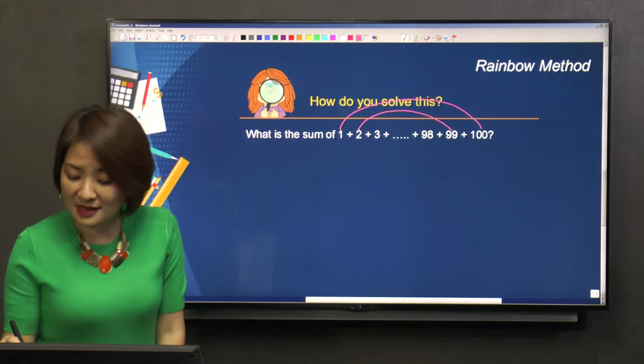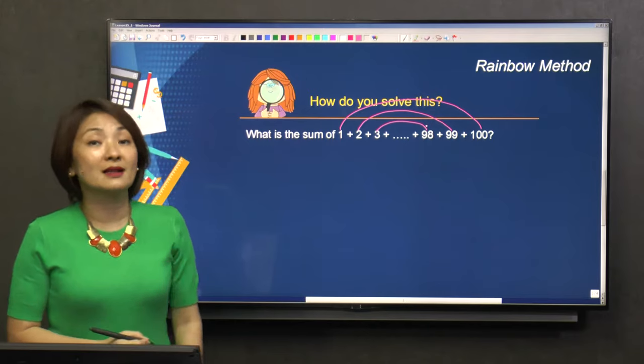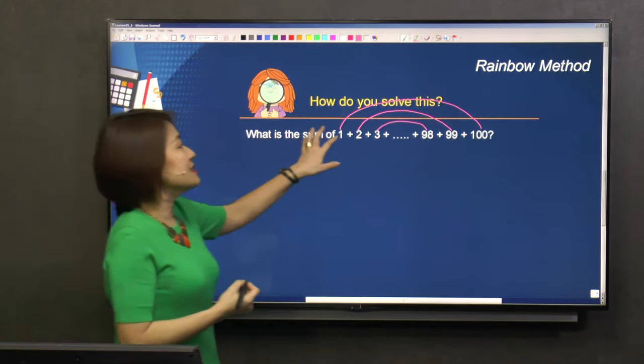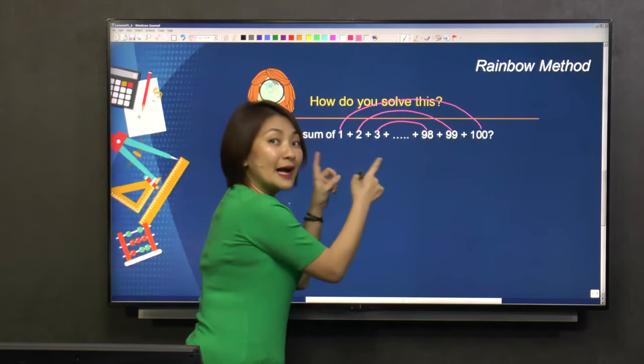And if I take the third number and the third last number, what do I get? 101. So basically, that's what I'm trying to achieve.